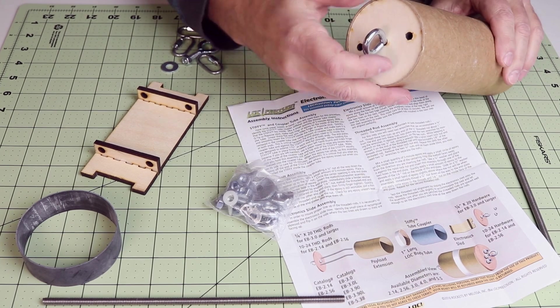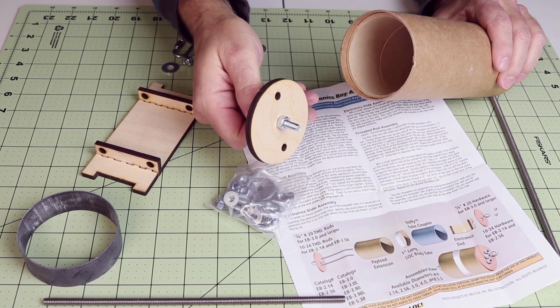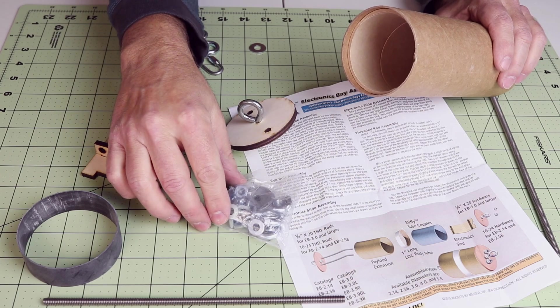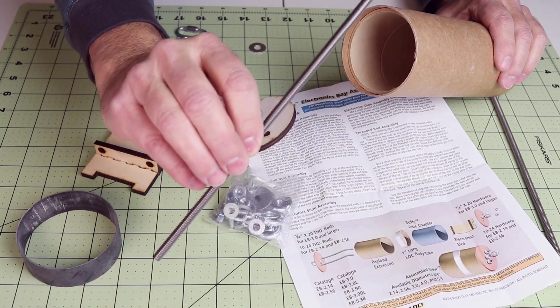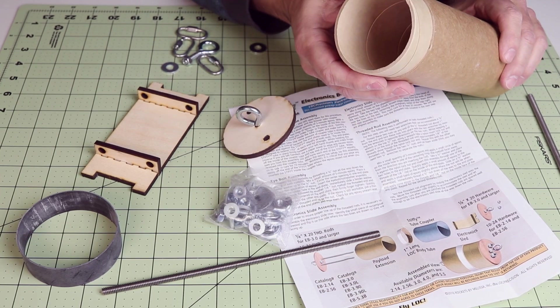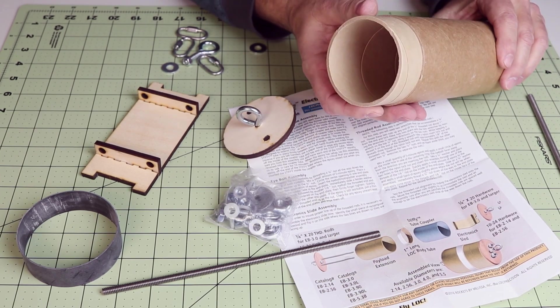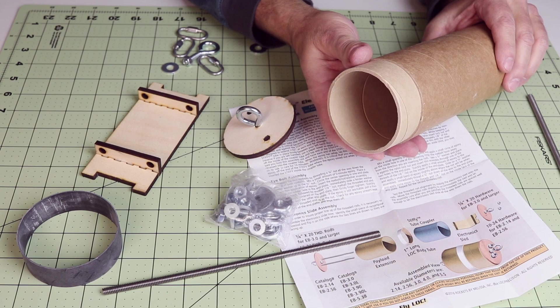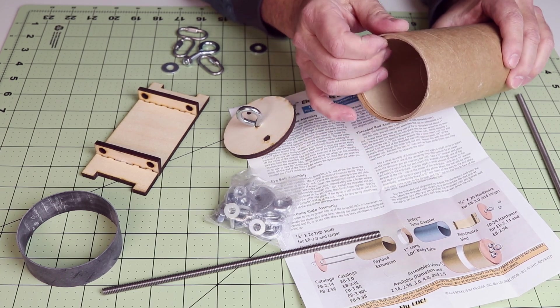It comes with quarter inch laser cut plywood and all the hardware parts that you need to assemble it, along with quarter inch rails. They feature what they call a stiffy tube inside, which is just a thick piece of cardboard that adds a substantial amount of strength to it and not a whole lot of weight.